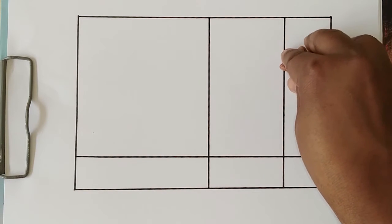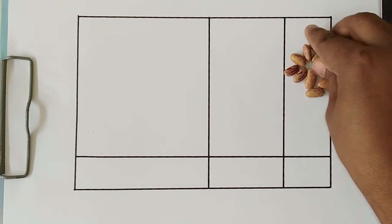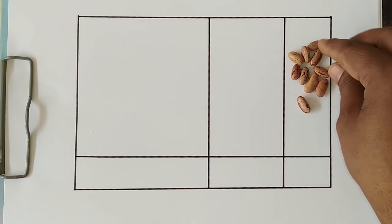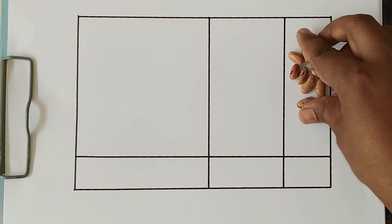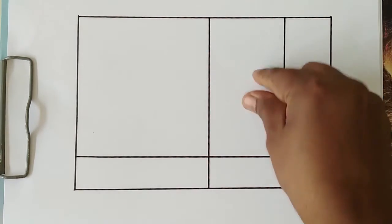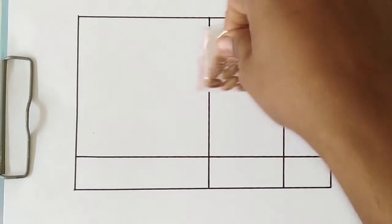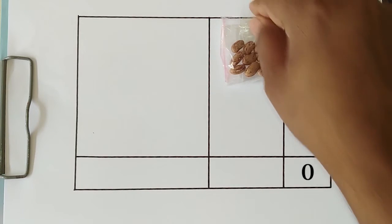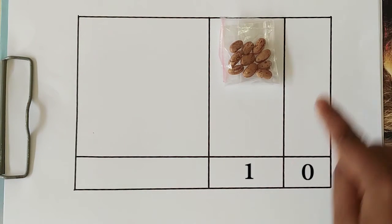So, to recap, we saw how 10 comes about. We will slowly add beans to the right side and the moment we have 10 beans, we move it to the left and put it inside a bag. And on the right side, now since there are no beans, we write a 0 and the number of bags on the left side is 1, so we write 10.